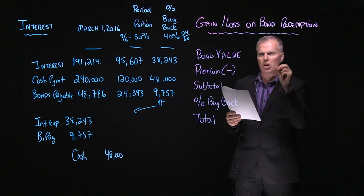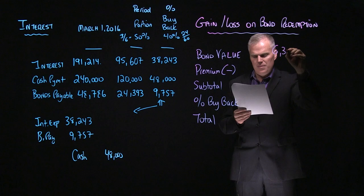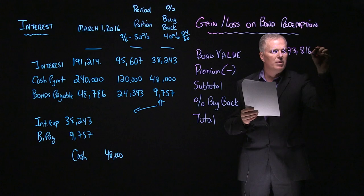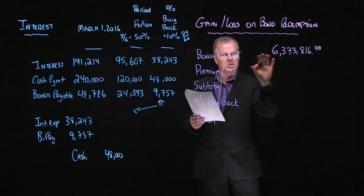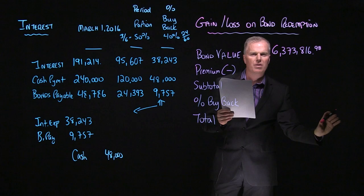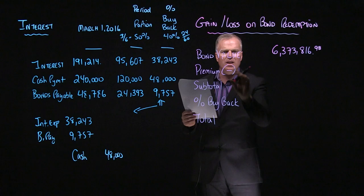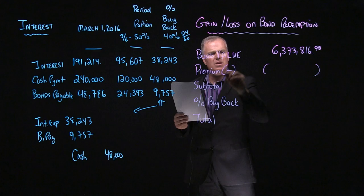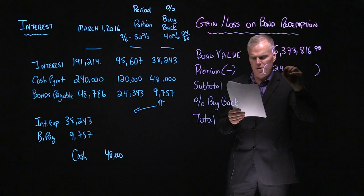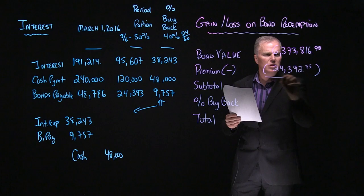The next thing we need to do is we need to look at the gain loss and the bond redemption. So looking at our effective interest schedule, we take the starting value for the period. So we'll take $6,373,816. And again, I'm just rounding, but I'll just put the pennies in here just to show you. So again, that is our starting value. Now we know that over time with premiums, we take the value down. With discounts, we take the value up. So that's why I have this negative here. And it's a good little memory tool when you put into this template so that premiums, I know I'm subtracting. Discounts, I know I'm adding back. So in this case, I would put in $24,392.75.